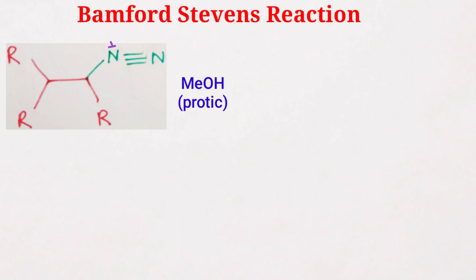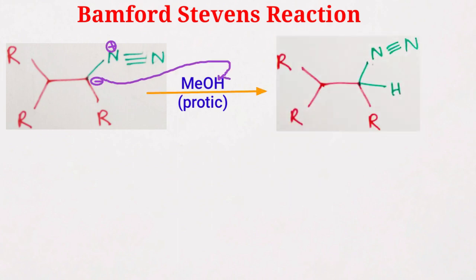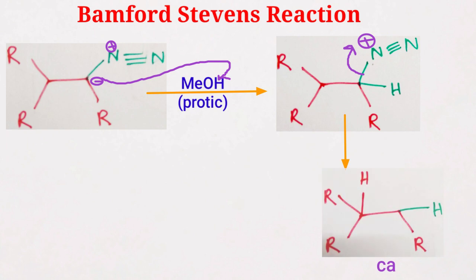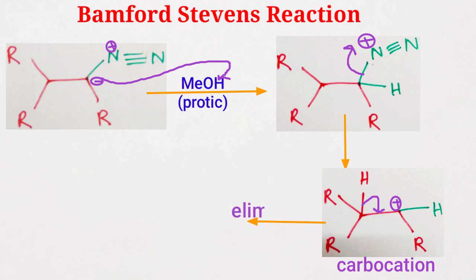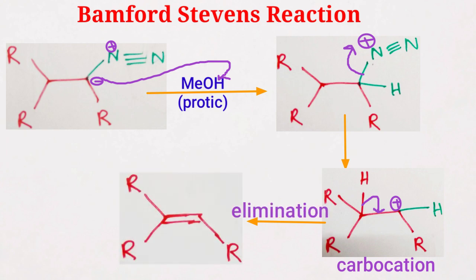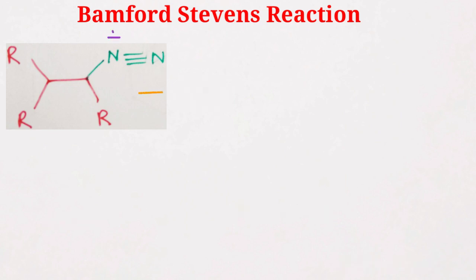In a protic solvent, this negative charge is protonated, so it will form this structure, and finally nitrogen is removed from the system to form a carbocation. This hydrogen then undergoes an elimination reaction to give the final alkene product.